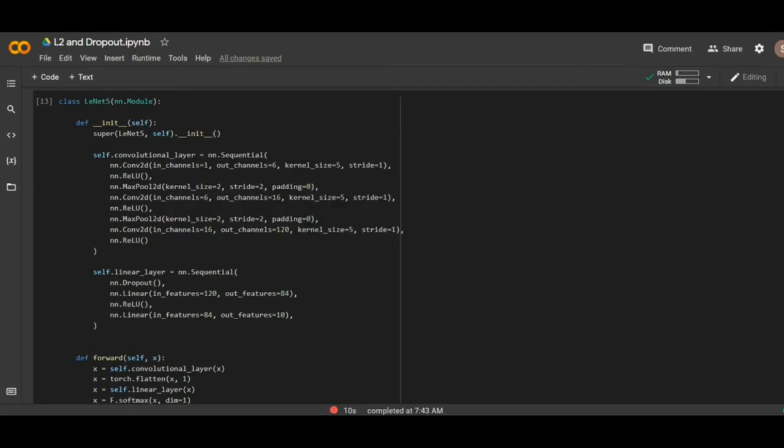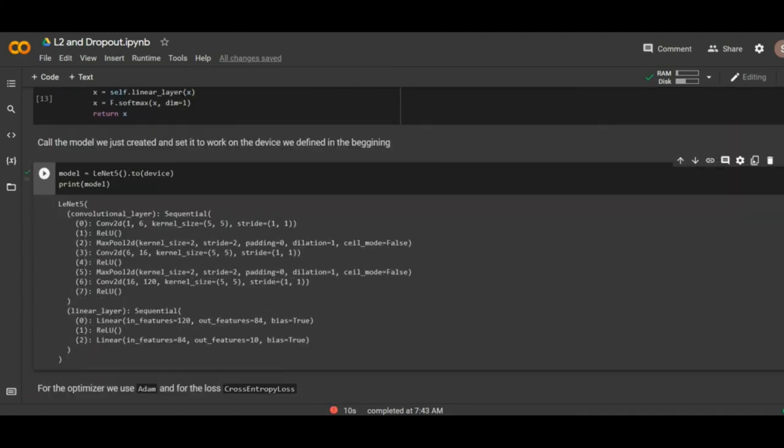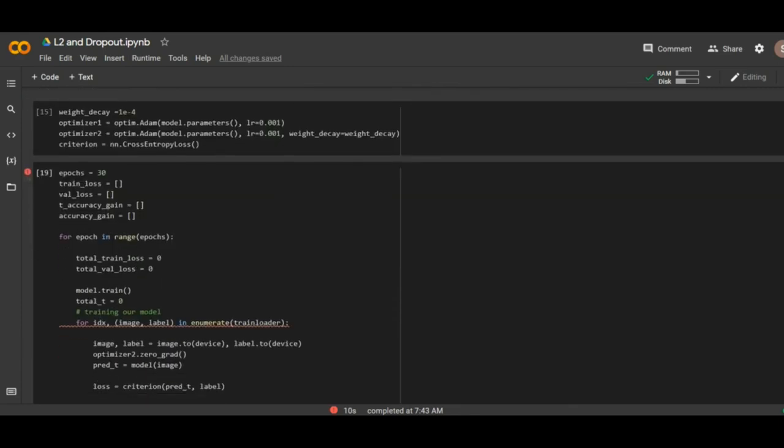Implementation of the L2 regularization to the parameters of your model is very simple. It is already included in most optimizers, including Adam optimizer that we will use for our example. And to apply the L2 regularization, we can simply use the weight decay parameter inside of function optim.adam.